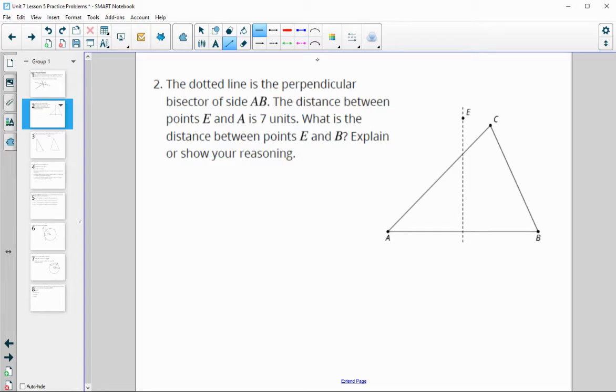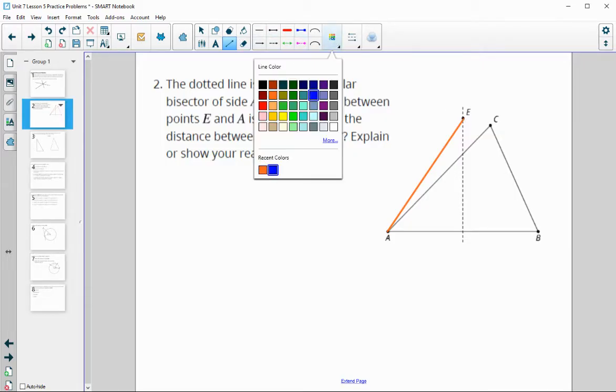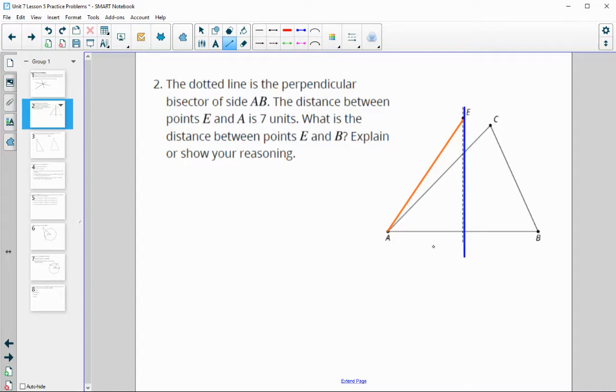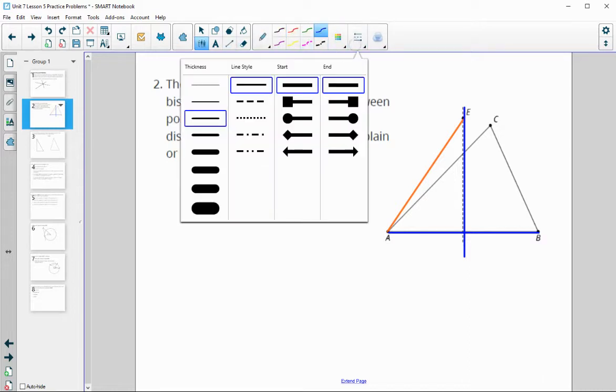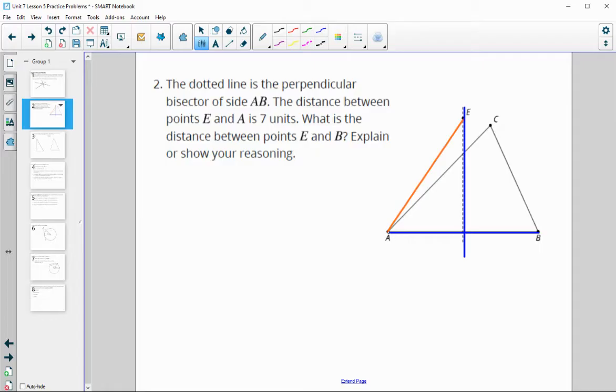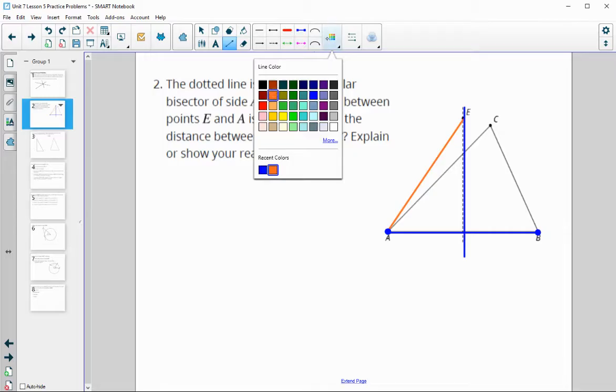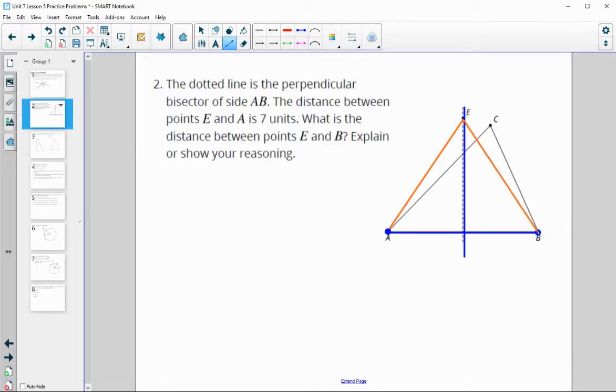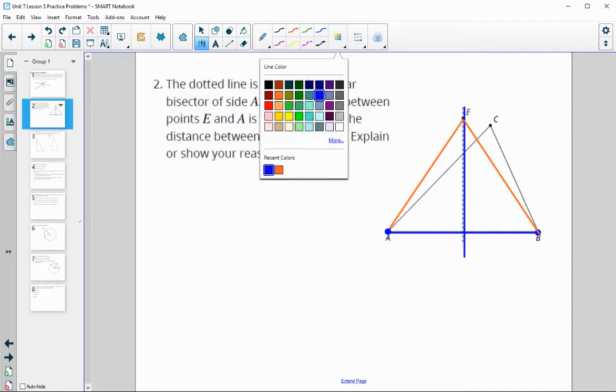The dotted line is the perpendicular bisector of side AB. The distance between E and A is seven units. What is the distance between E and B? If a point is on the perpendicular bisector, that means that it's equidistant from the endpoints of the segment that it is bisecting. So E is the same distance from A as it is from B. The answer to this one is going to be seven.